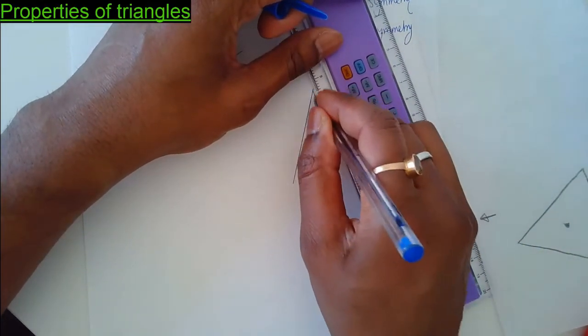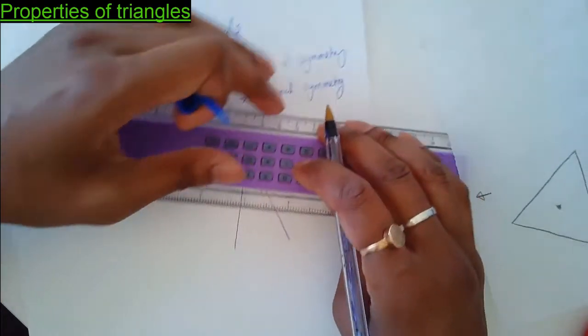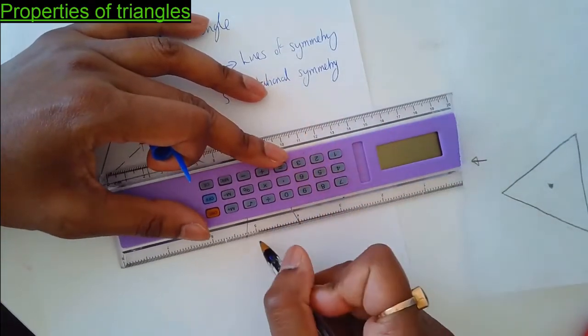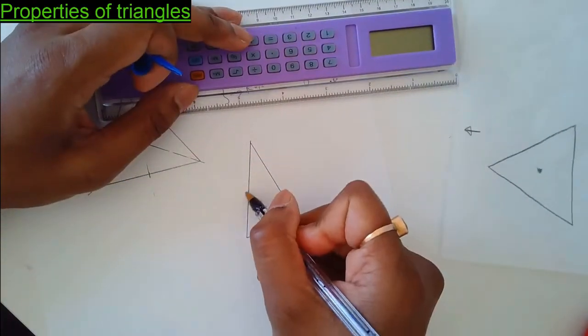What I'm doing here is an isosceles triangle. This side is the same as that side.